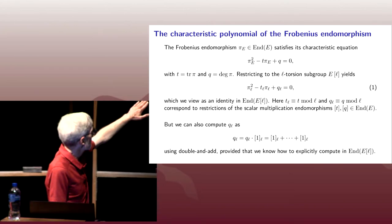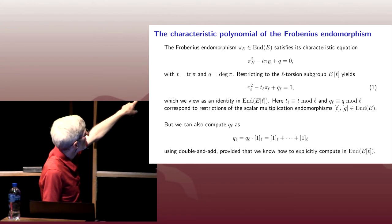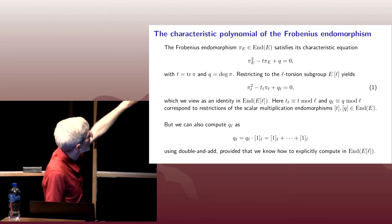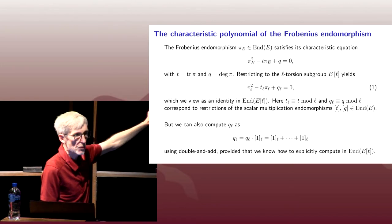So in the bottom of the slide, I'm just making it completely explicit how we could compute the q_l here. We're not actually going to compute it by reducing the q power, reducing multiplication by q to the l-torsion. We're going to compute it inside the l-torsion ring using an endomorphism we know, the identity.